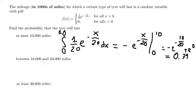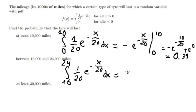Similarly for the second part, between 16,000 and 24,000 miles, we integrate from 16 to 24. Calculating this gives us 0.15.